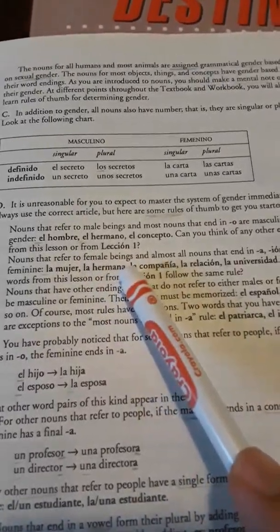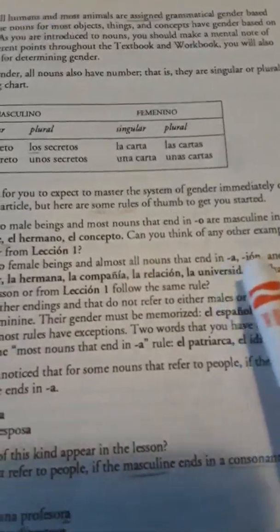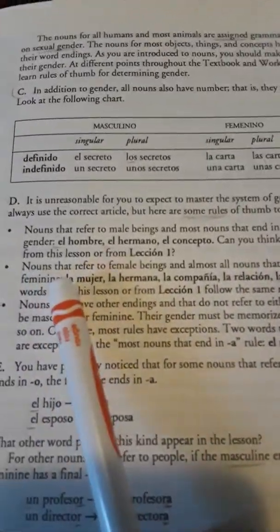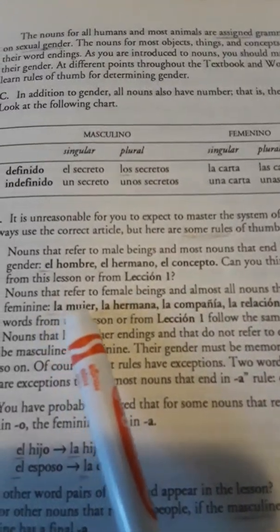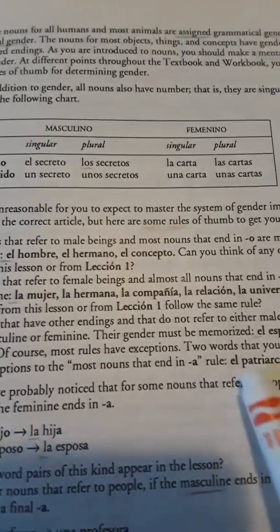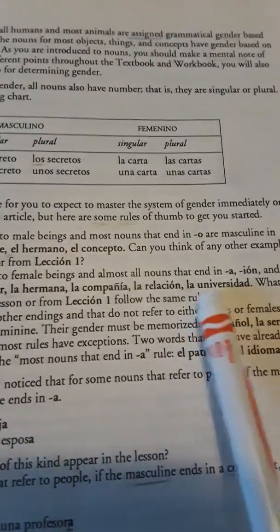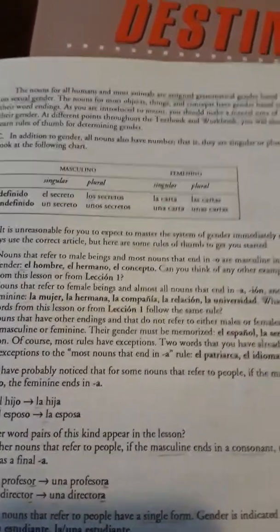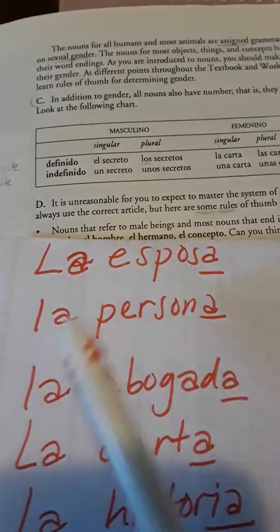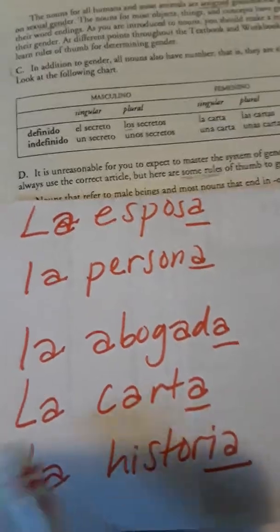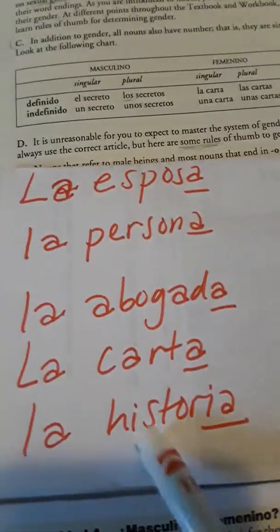Nouns that refer to female beings and almost all nouns that end in A, I-O-N like in lección, and D like universidad are feminine. Examples: la mujer, la hermana, la compañía, la relación, la universidad — see the D? Other examples from this lesson: la esposa — A, la persona — A, la abogada — A, la carta — A, and la historia — A. Those were examples from your vocab words about how these endings work.